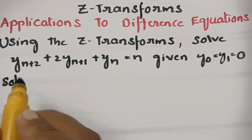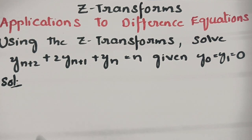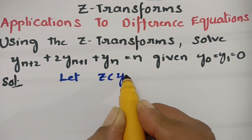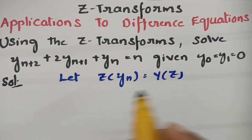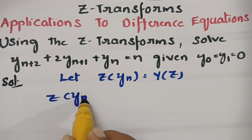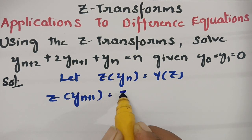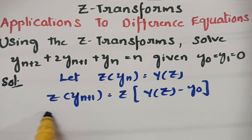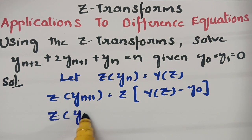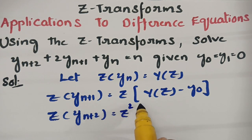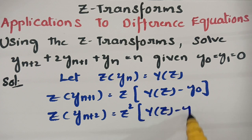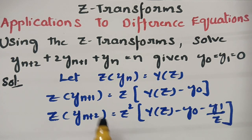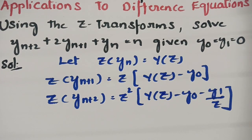In order to solve this problem we have to consider: let Z of y(n) equal capital Y(Z). Z of y(n+1) can be written as Z·Y(Z) − y(0). And Z of y(n+2) can be written as Z²·Y(Z) − y(0) − y(1)/Z. We have to substitute all these whenever necessary.